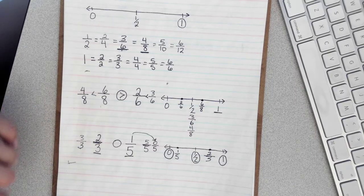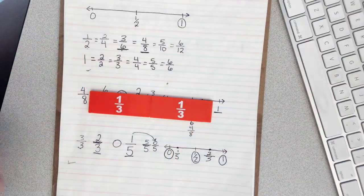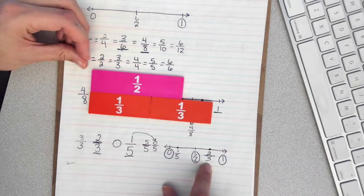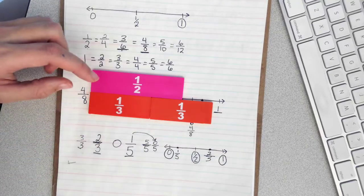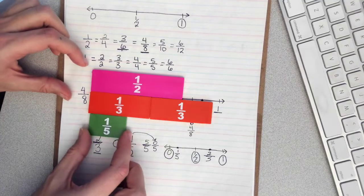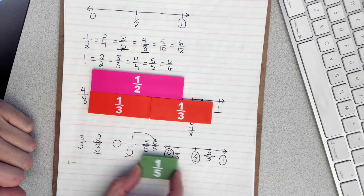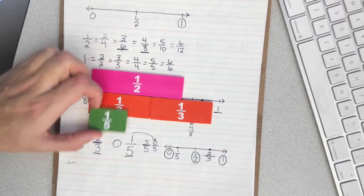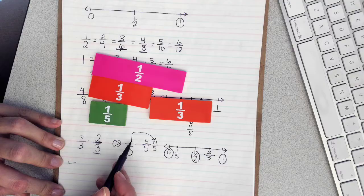I can even check my work using fraction bars. So I have 2 thirds, and if I'm thinking about 1 half as a benchmark, yes, it's just a little bit bigger than 1 half — so I think I put that in the right spot. And then 1 fifth is smaller than 1 third and very close to 0, and less than 1 half. So after checking my work with the fraction bars, I know 2 thirds is greater than 1 fifth.